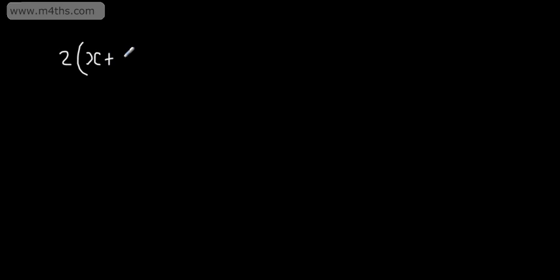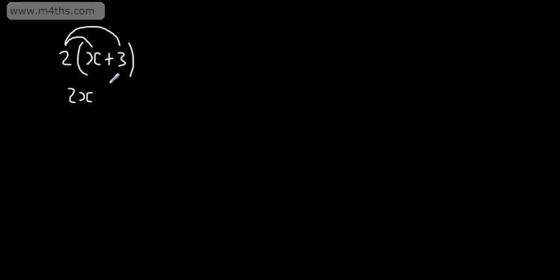I'm going to go back to an example in algebra. So let's go for 2 multiplied by the quantity x plus 3. If we were asked to multiply this out or expand it, we would multiply the 2 by the x and the 2 by the 3. That would give me 2x, and since we have an addition sign, plus 6. So all I've done is expanded the brackets, or multiplied out the brackets.